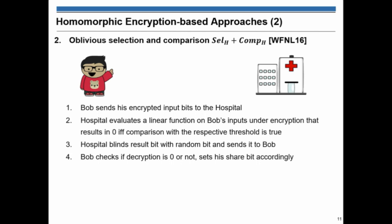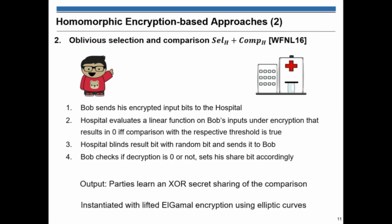In oblivious selection and comparison, Bob sends the encryption of each bits of the features to hospital. And the hospital just computes a linear function on the inputs, which this encryption would just decrypt to zero if the comparison is true. And then, hospital blinds this result bit, and then send this bit to Bob. Bob can just decrypt this value and set his share bit accordingly.